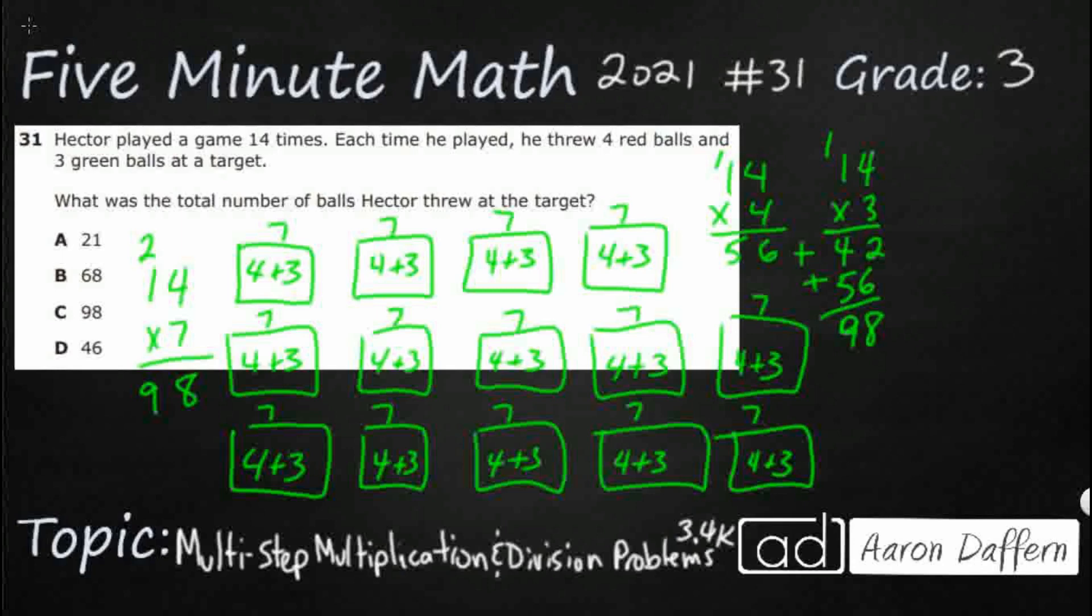So, I'm feeling pretty good about this 98 right here. But I'm thinking, where are some of these other choices coming from? Well, I could tell you where 21 comes from. What we did is we just added 14 plus 4 plus 3. See, that's 18. That's 21. But we're not just adding all of the numbers. He had 14 games and 7 in each game. So, 21 is not going to work.